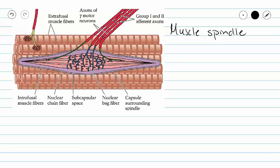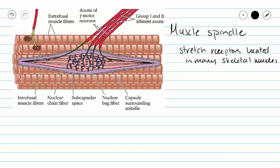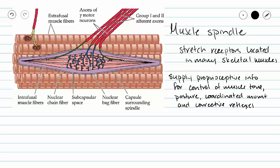Muscle spindles are stretch receptors located in many of our skeletal muscles. They provide the brain with proprioceptive information for the maintenance of muscle tone, posture, coordinated movement, and corrective reflexes. As we can see here, the muscle spindle is embedded in our skeletal muscle, and sensory neurons have their dendrites wrapped around structures called intrafusal fibers.